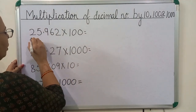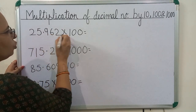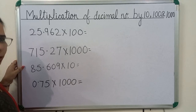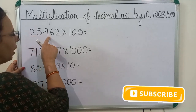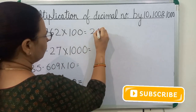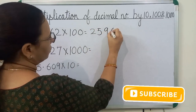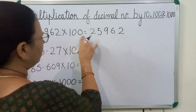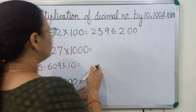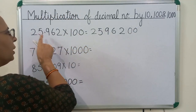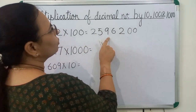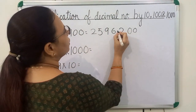Now we will see some more examples. We will multiply 25.962 by 100. We will ignore the decimal point for some time. 25,962 multiplied by 1 is equal to 25,962. 100 has 2 zeros, so we will write here 2 zeros. You can see in the question the decimal point is before 3 digits, so in the answer also we will put the decimal point before 3 digits.